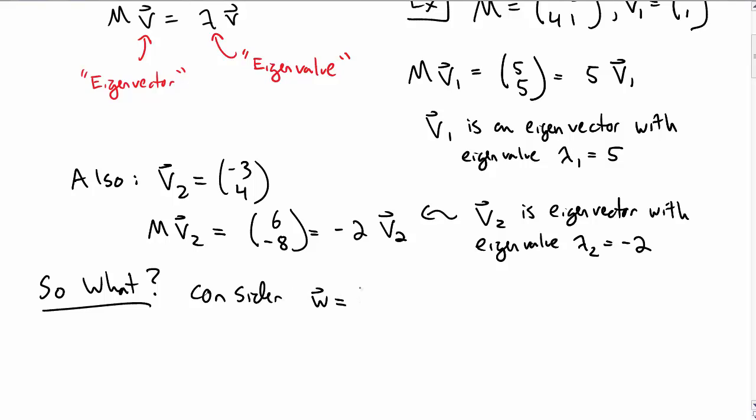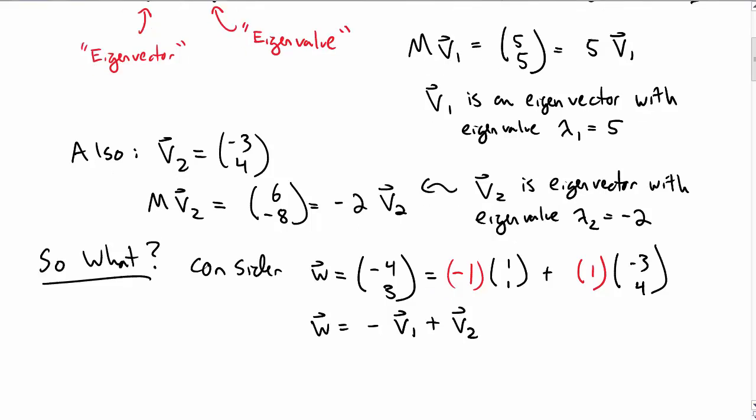Well consider a matrix W which is say (-4, 3). Now suppose I want to write that in terms of V1 and V2. There's many times I'd like to do this in physics. How do I do that? Well I need to have -1 of V1 and plus 1 of V2 in order to get the right components. Or I could just write that directly in terms of V1 and V2 like this.